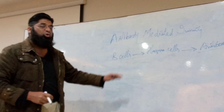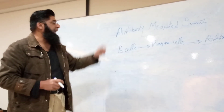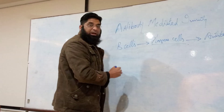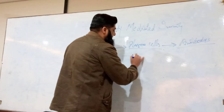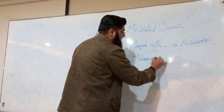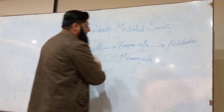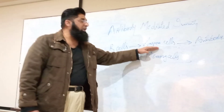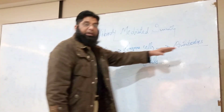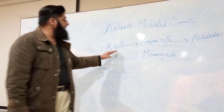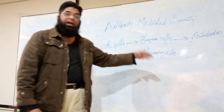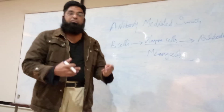There are two types of B-cells involved in antibody-mediated immunity. Number one, plasma cells, and number two, memory cells. Some of the B-cells are converted into plasma cells, which then produce antibodies, and some of the B-cells are converted into memory cells, which perform the function of memory.